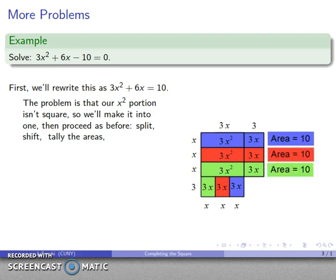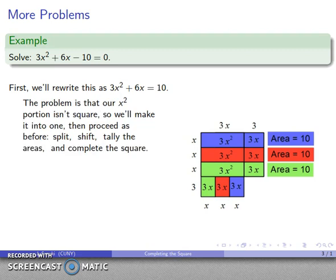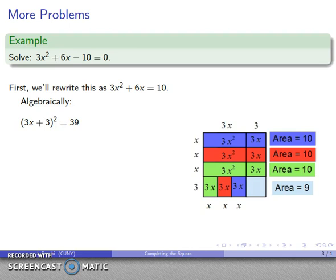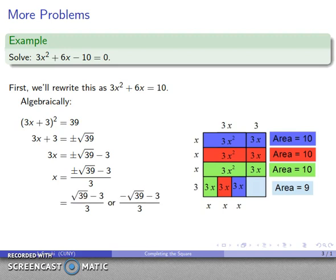The little bite we're missing here is a 3 by 3 region with area 9. So my entire figure has area 10, 20, 39. That's (3x + 3)² = 39, which tells me algebraically that 3x + 3 is plus or minus √39. That breaks into the two possible solutions for my original equation.